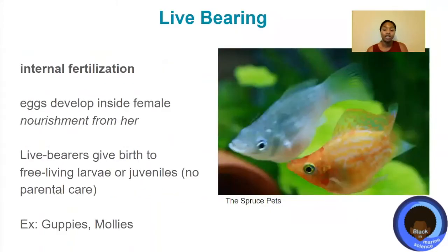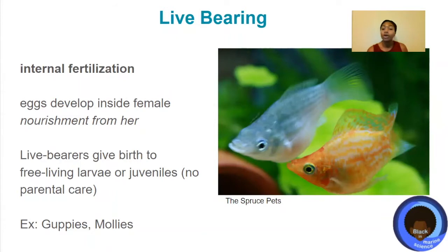In live-bearing fish, they do internal fertilization, so the eggs will develop inside of the female. They'll get their nourishment from her, and then the live-bearing mom will give birth to free-living larvae or juveniles that require no parental care once they're born. Some examples of these would be guppies or mollies, like the ones in the photo.